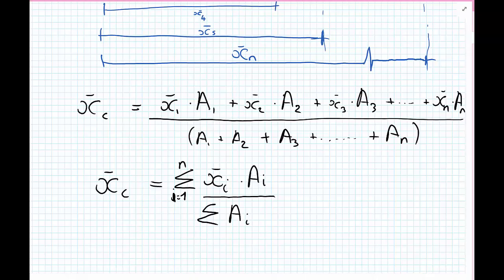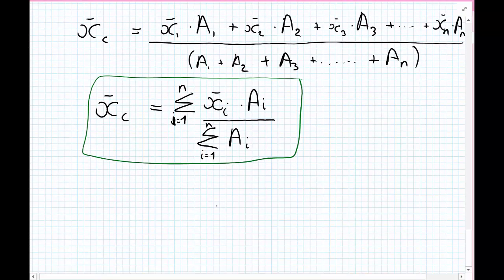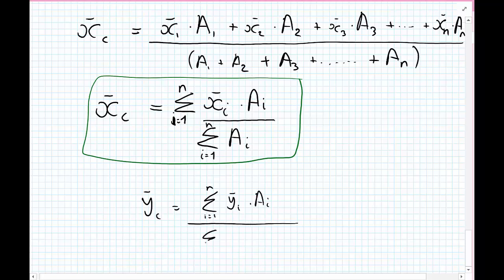Just for completeness, the y-coordinate formula is almost identical: y-bar of the composite equals the summation from i equals 1 to n of y-bar i multiplied by the area of the individual bodies, divided by the summation from i equals 1 to n of all the areas added together. We're going to use these formulas in the next couple of tutorial examples.